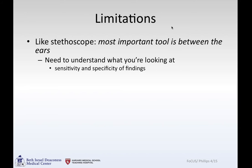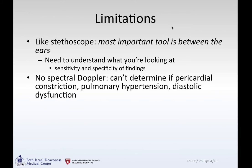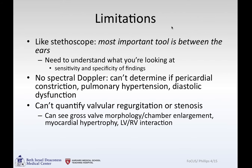Perhaps most importantly among the limitations is what you do with the information you see — just like the stethoscope, the most important tool is between the ears. You need to understand what you're looking at, and the sensitivity and specificity of the findings. Without spectral Doppler, you can't make calls on pericardial constriction, pulmonary hypertension, or diastolic dysfunction. You also cannot quantify valvular regurgitation. You can get a sense based on how far a jet goes, but it's the thickness of the jet — not the distance back into the atrium — that truly matters in terms of severity. Measuring things like PISA just isn't done on a handheld unit.